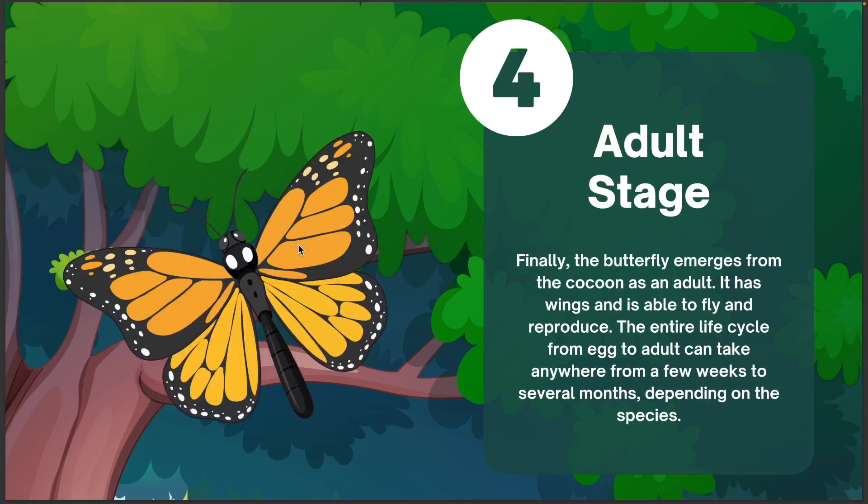Adult Stage. Finally, the butterfly emerges from the cocoon as an adult. It has wings and is able to fly and reproduce. The entire life cycle from egg to adult can take anywhere from a few weeks to several months, depending upon the species.